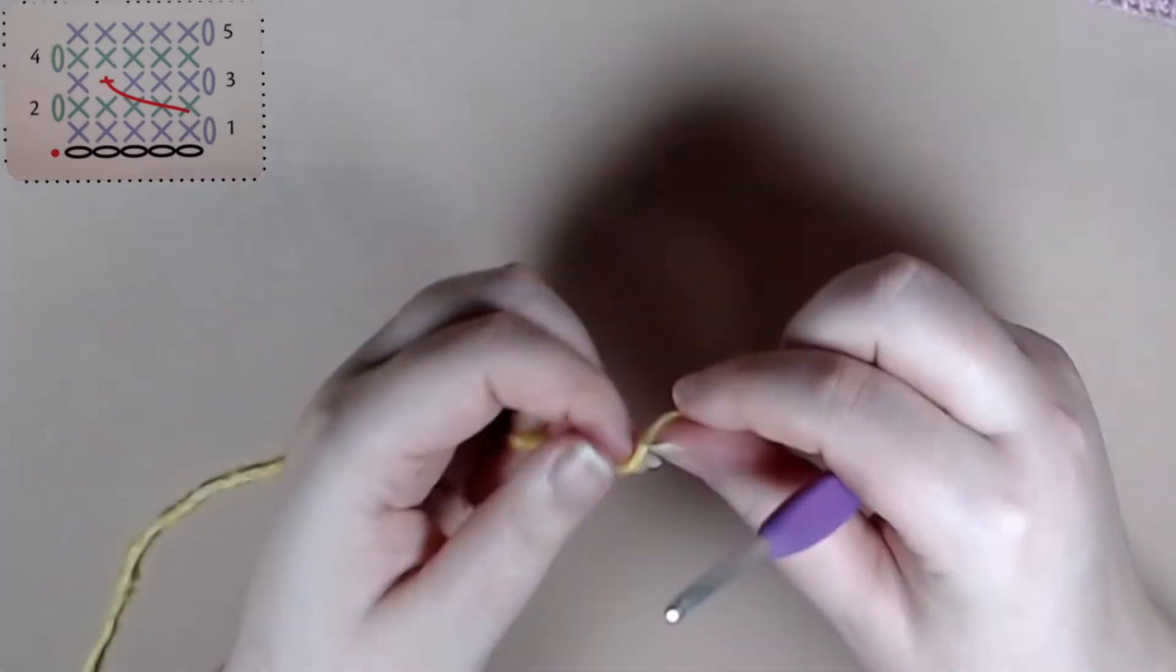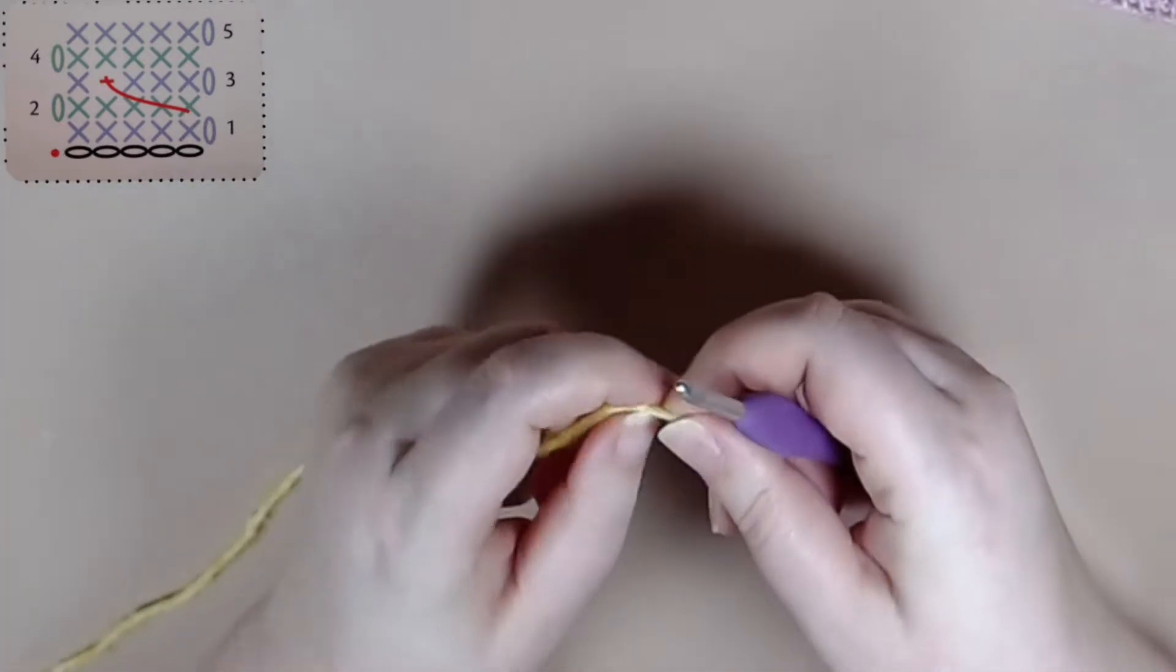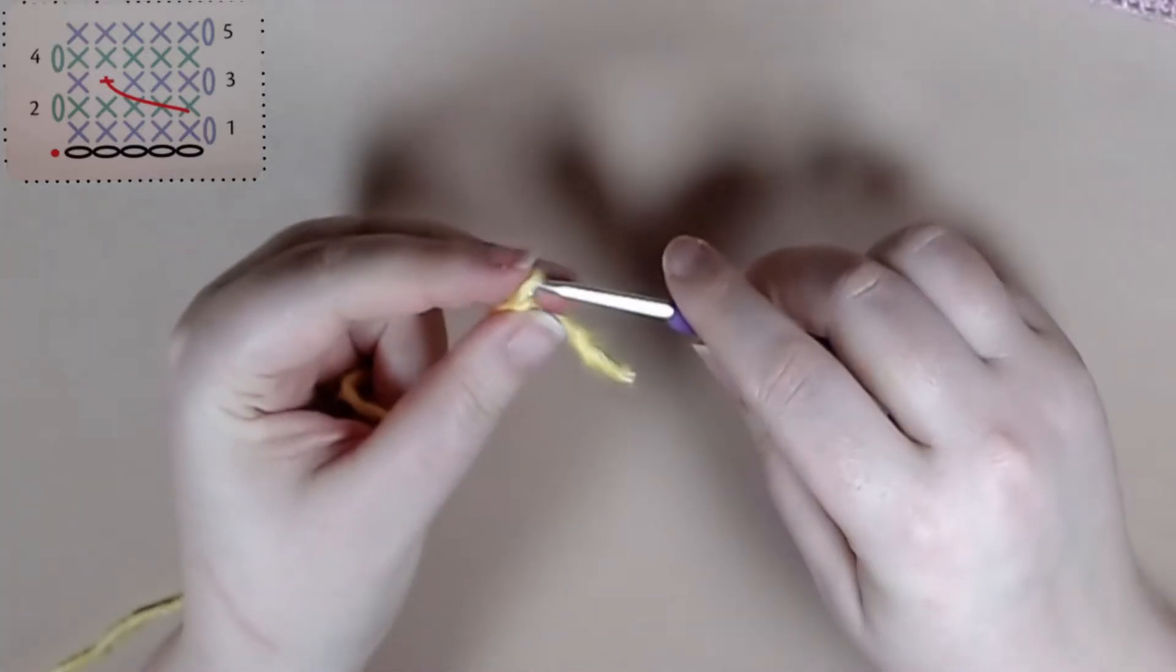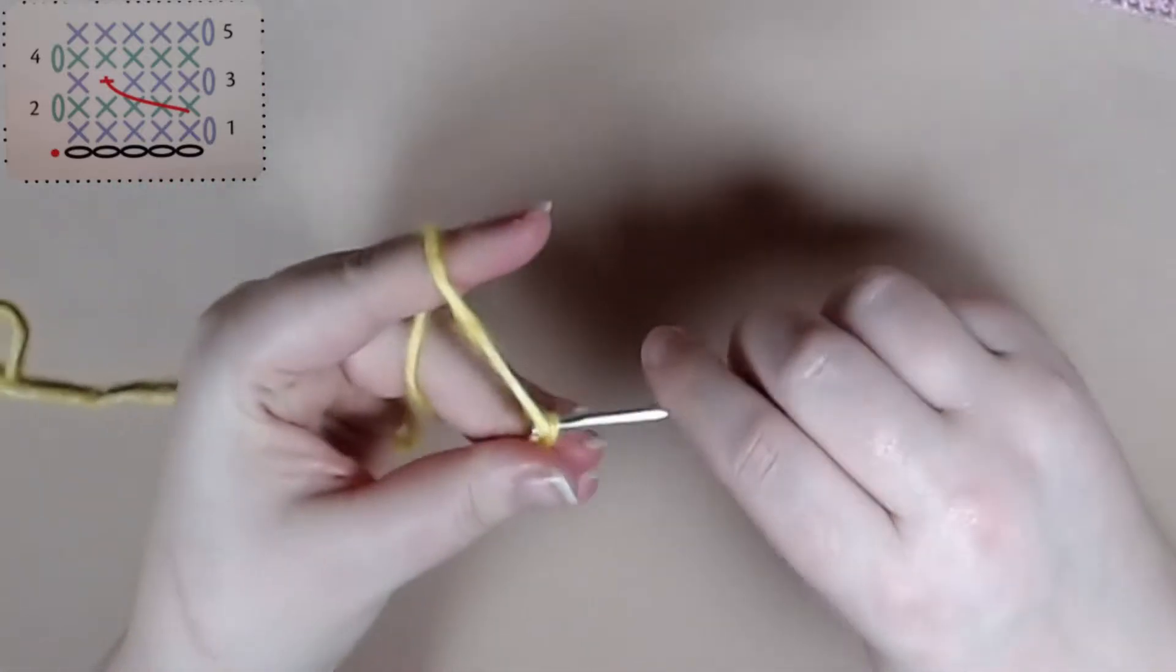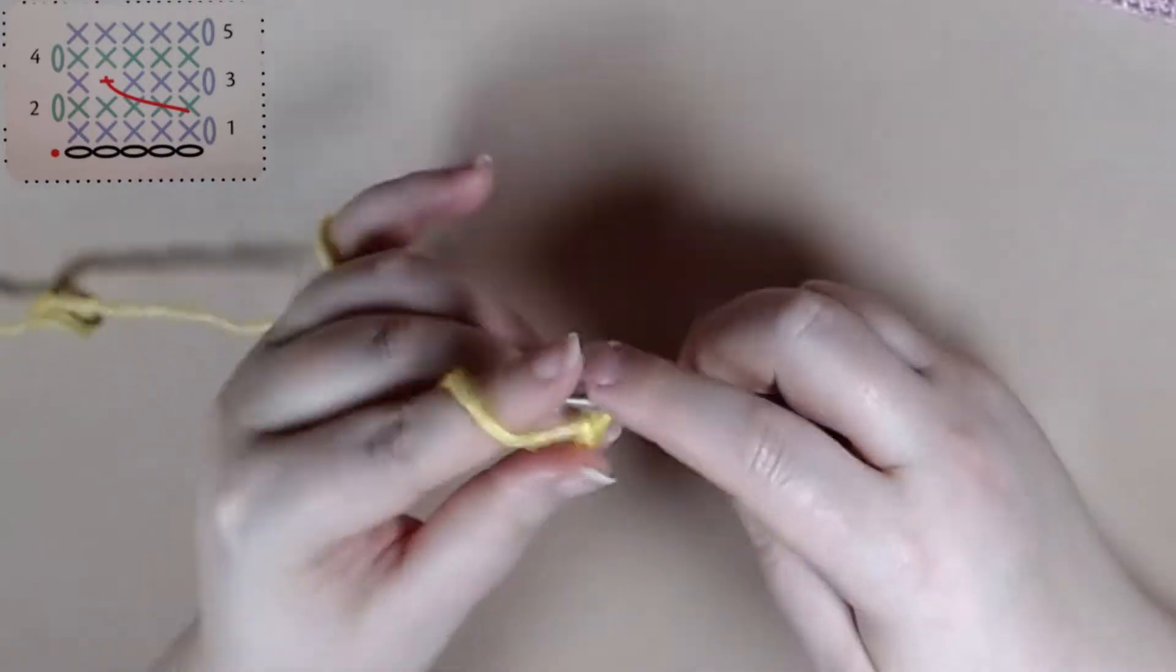If you need help with that you can check down in the description below on my videos of how to do that. So to get started you want to chain multiples of four plus one. For this video I'm just doing a quick five chains.